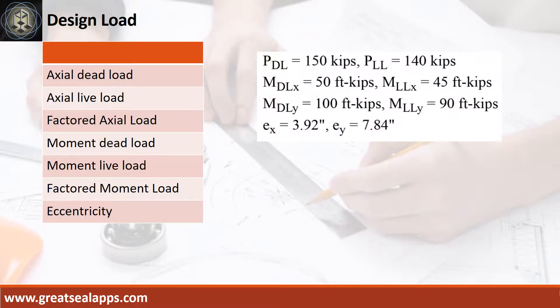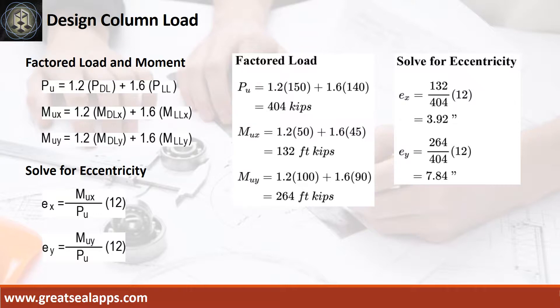The column carries a bi-axial bending load with axial dead load of 150 kips and axial live load of 140 kips, moment dead load at x-axis of 50 foot-kips, moment live load at x-axis of 45 foot-kips, moment dead load at y-axis of 100 foot-kips, and moment live load at y-axis of 90 foot-kips. Given these values, the factored axial load is 404 kips.